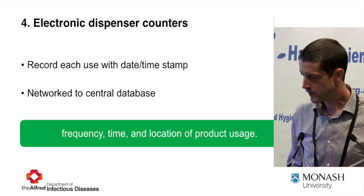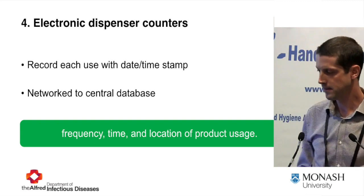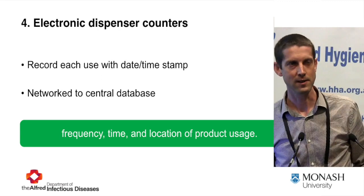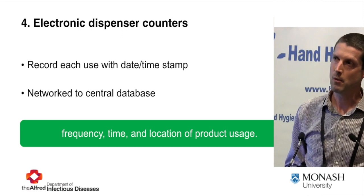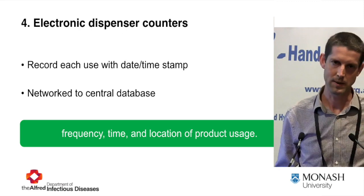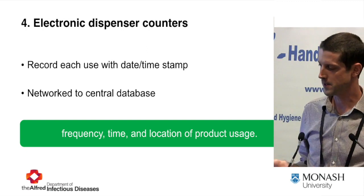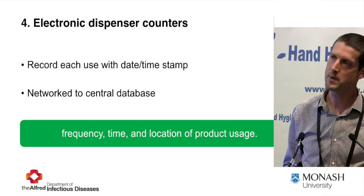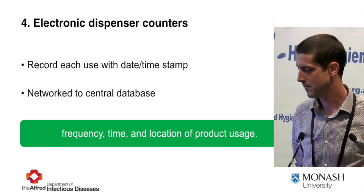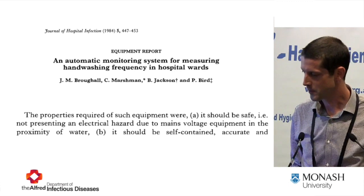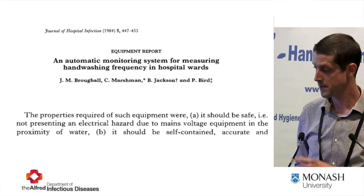That brings us to the fourth approach: electronic dispenser counters. What they're really doing is counting when and where a dispenser is pumped. The big limitation is there's no denominator — no counting of opportunities. Interestingly, the first paper I found looking at automated data collection is from 1984, from a hospital in the UK.